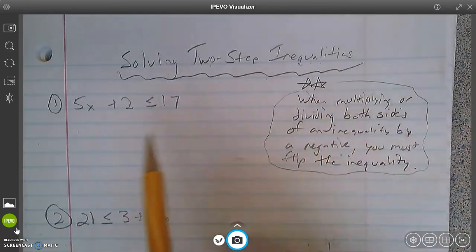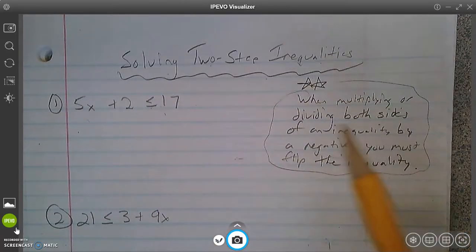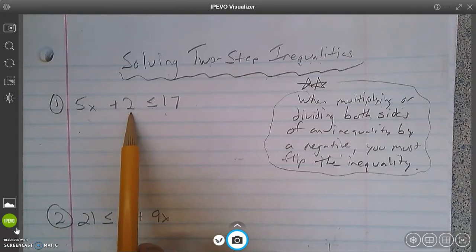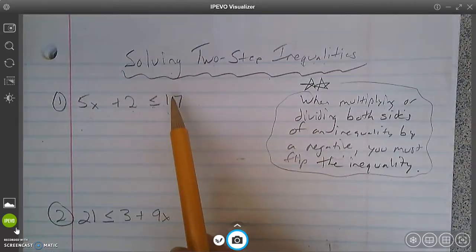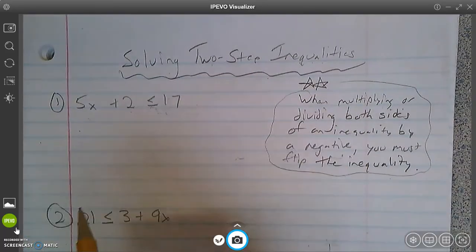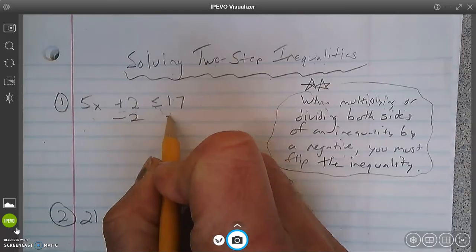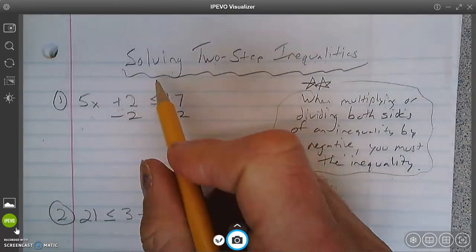So this is still true even though I have two steps rather than one. So let's see. 5x plus 2 is left-hand less than or equal to 17. So we're going to solve it and we're going to graph it. So first step, opposite of adding 2 is subtracting 2.